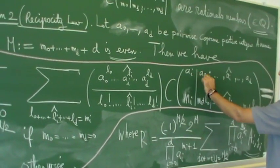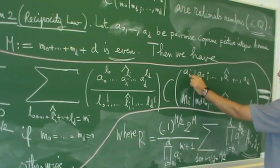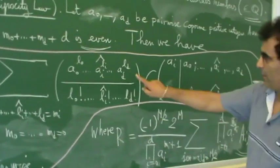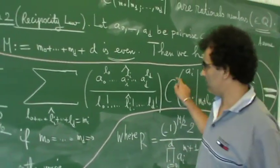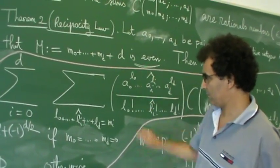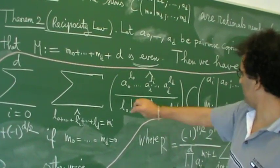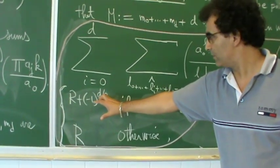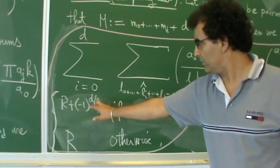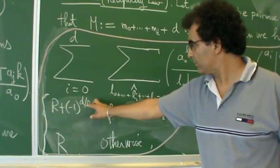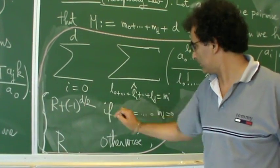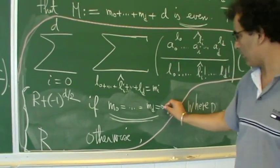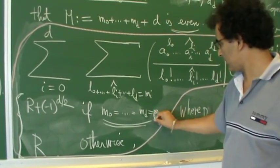Under this hypothesis, we have the summation over all these sums, where we permute A0 with A_E and affect this sum with these factors. The summation is very simple. For example, we obtain the sum is R plus minus 1 to D over 2, where all M0 to MD are 0.